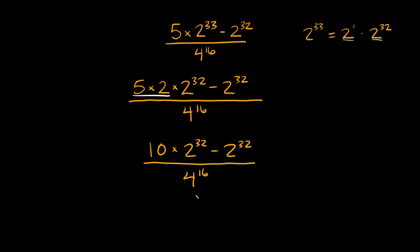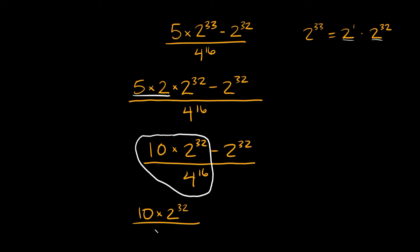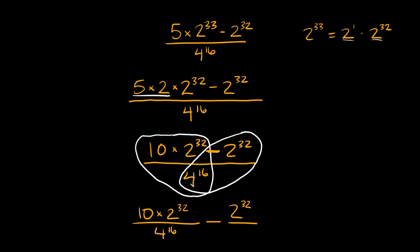So why don't we split this up into two separate fractions, just so we can work with them a little more easily. We're going to write it as 10 times 2 raised to the 32nd over 4 to the 16th, minus 2 raised to the 32nd over 4 to the 16th.